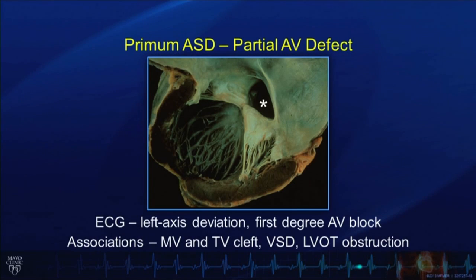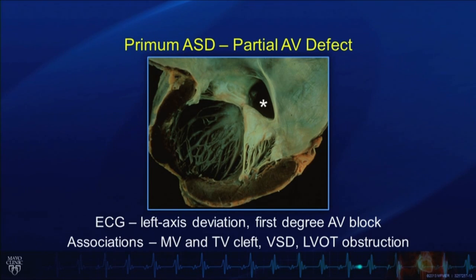Turning our attention now to the next most common atrial septal defect — the primum atrial septal defect, as demonstrated by this asterisk. We're looking here at the heart from the left side, with the left atrium on the right side of the screen and the left ventricle on the left side of the screen. An important finding demonstrated here is a cleft in the anterior mitral leaflet. Primum atrial septal defect and cleft mitral valve often go hand in hand.